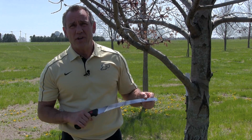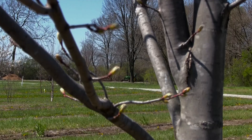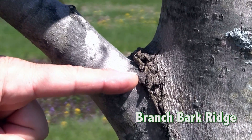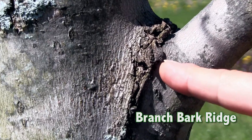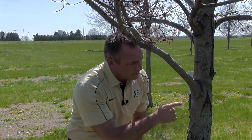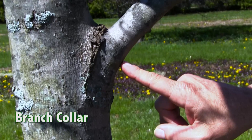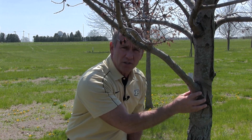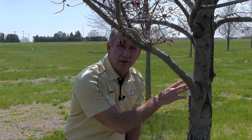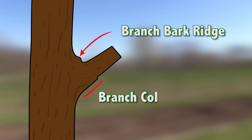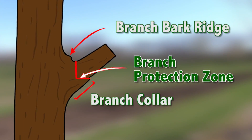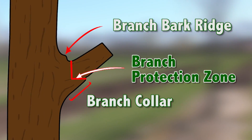Proper technique in pruning is essential for wound recovery. In order to make a proper cut, some branch components are necessary to identify. First, we need to identify the branch bark ridge, which is the raised area of compressed bark between the main stem and the branch. The other important part to identify is the branch collar, which is typically located on the underside of the branch, close to the branch union. Together, these two will help us determine where we need to make our final pruning cut. No cut should ever be made inside this line. Inside this is called the branch protection zone, which contains specialized healing properties to help that wound seal properly.